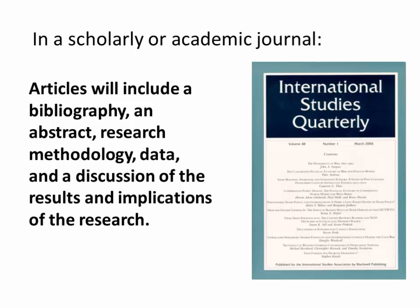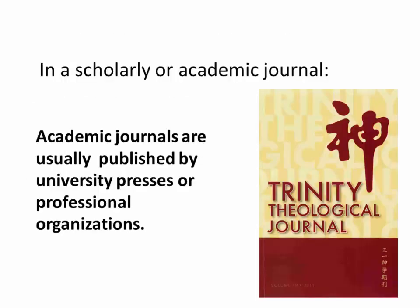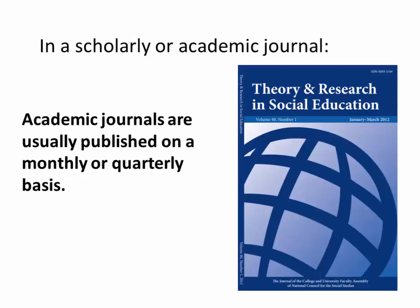Articles will include a bibliography, an abstract, research methodology, data, and a discussion of results and implications of the research. Academic journals are usually published by a university or professional organization, typically on a monthly or quarterly basis.